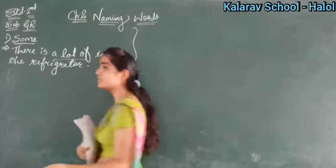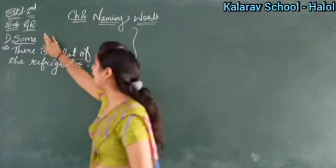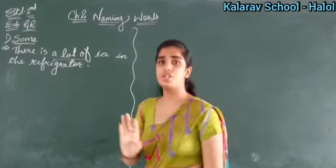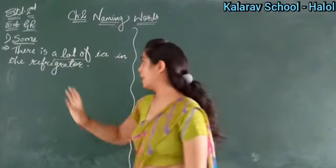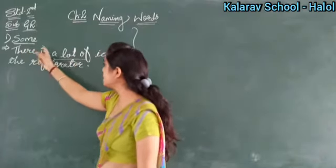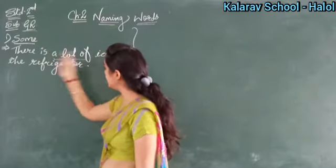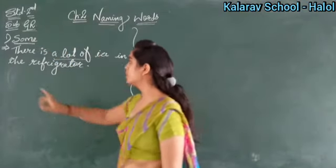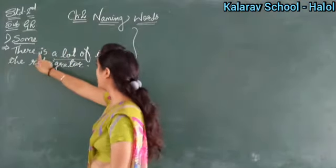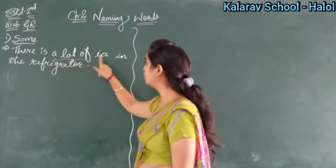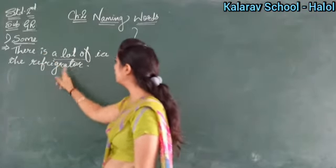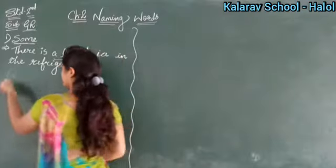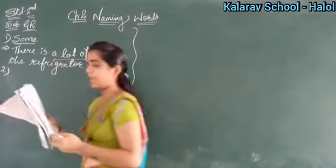This is very easy. Only the underlined word needs to be replaced; the rest of the question stays the same — copy it as it is. So the answer becomes: 'There is a lot of ice in the refrigerator.' Now look at second number.